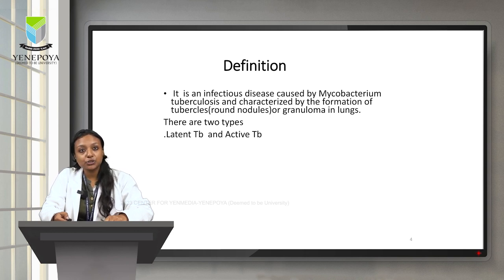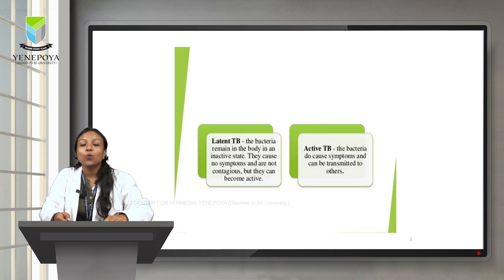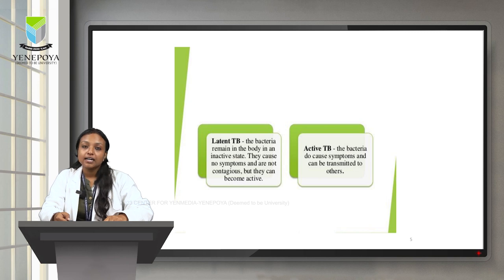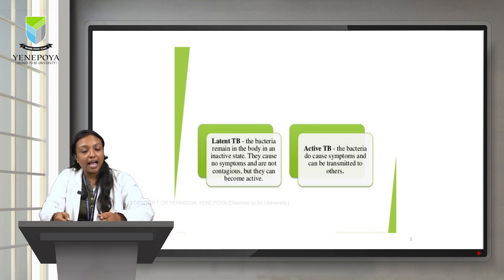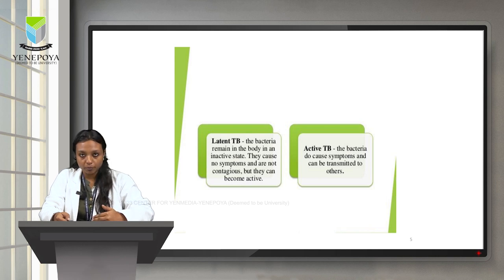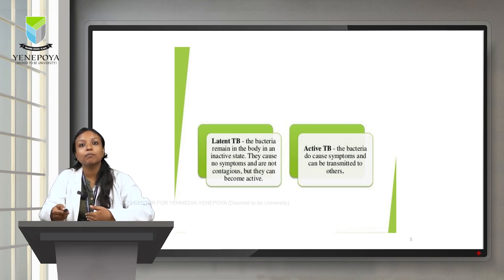There are two types of TB. First is latent TB and second is active TB. Latent TB means the bacteria is in inactive form — the mycobacterium tuberculosis incubation period is 11 to 14 days, so the bacteria is in inactive form. Active TB means once it has entered inside the human body it starts to activate, and it will show symptoms in the human body.